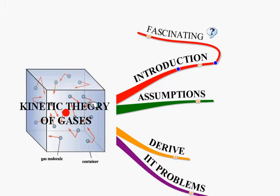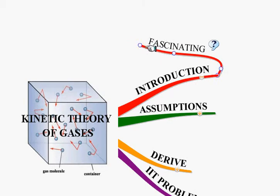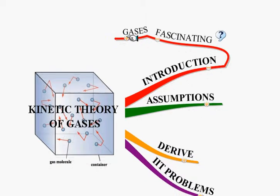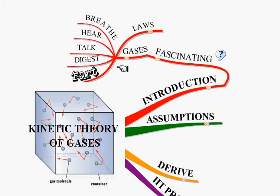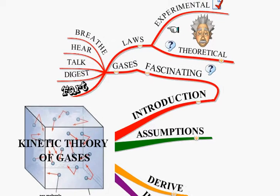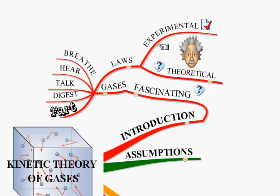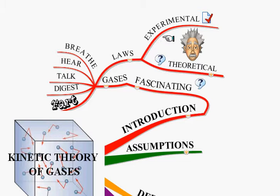I feel that the kinetic theory of gases is an extremely fascinating theory. Why? Because you see gases all around us — we breathe, we hear, we talk, we digest food, and even fart because of gases. All the behavior of these gases can be explained using a very simple law called the ideal gas law. You must already know what that law is: PV = nRT. This law was derived experimentally, so it's an empirical law — just by observing the behavior of gases, one can arrive at it. All real gases obey this law under conditions of low pressure and low density.